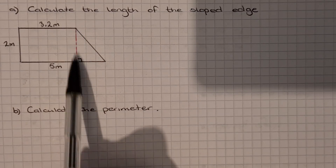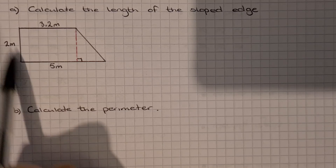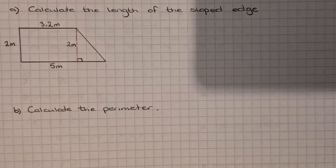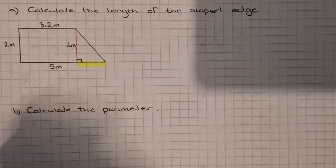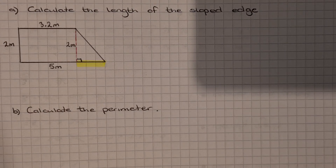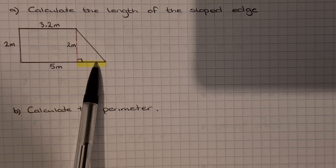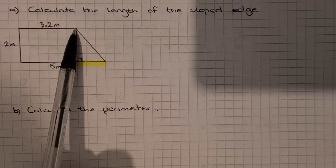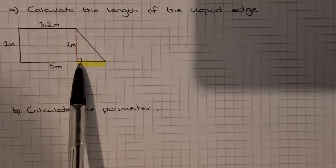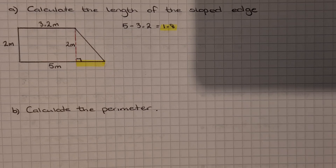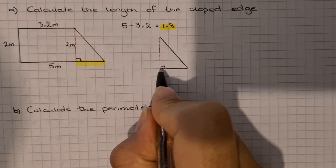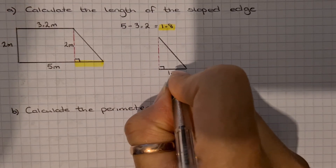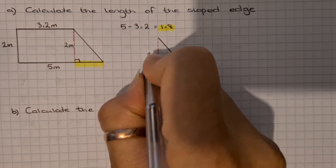We do know that this red line I've drawn is the same length as the vertical side, so that's 2 metres. We're trying to find the sloped edge, so there must be a way to find the line along the bottom. Looking at the shape, the total length of the base is 5 metres and the length across the top is 3.2 metres, so we do 5 minus 3.2, which gives us 1.8 metres for that highlighted edge. I'm going to draw this triangle out separately at the side — this line is 1.8, this is what we're trying to find, and the red line is 2 metres.